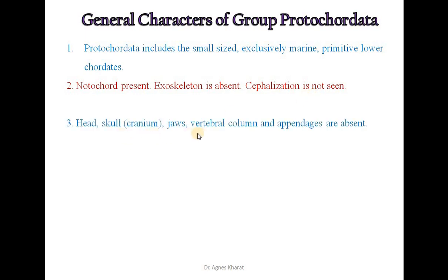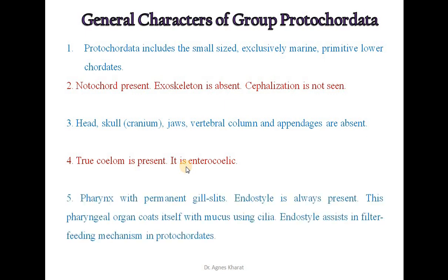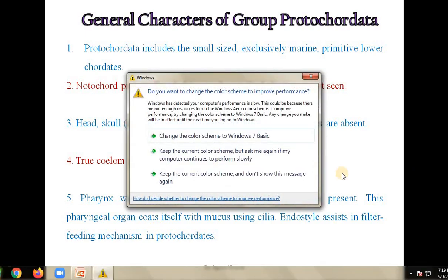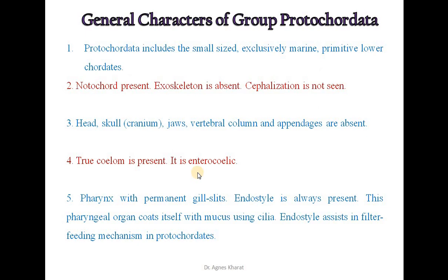Head, skull, jaws, vertebral column and appendages are absent. True coelom is present; these are enterocoelomic organisms. Pharynx with permanent gill slits and endostyle is always present. This pharyngeal organ coats itself with mucus using cilia. Endostyle assists in filter feeding mechanism in Proto-Chordata.